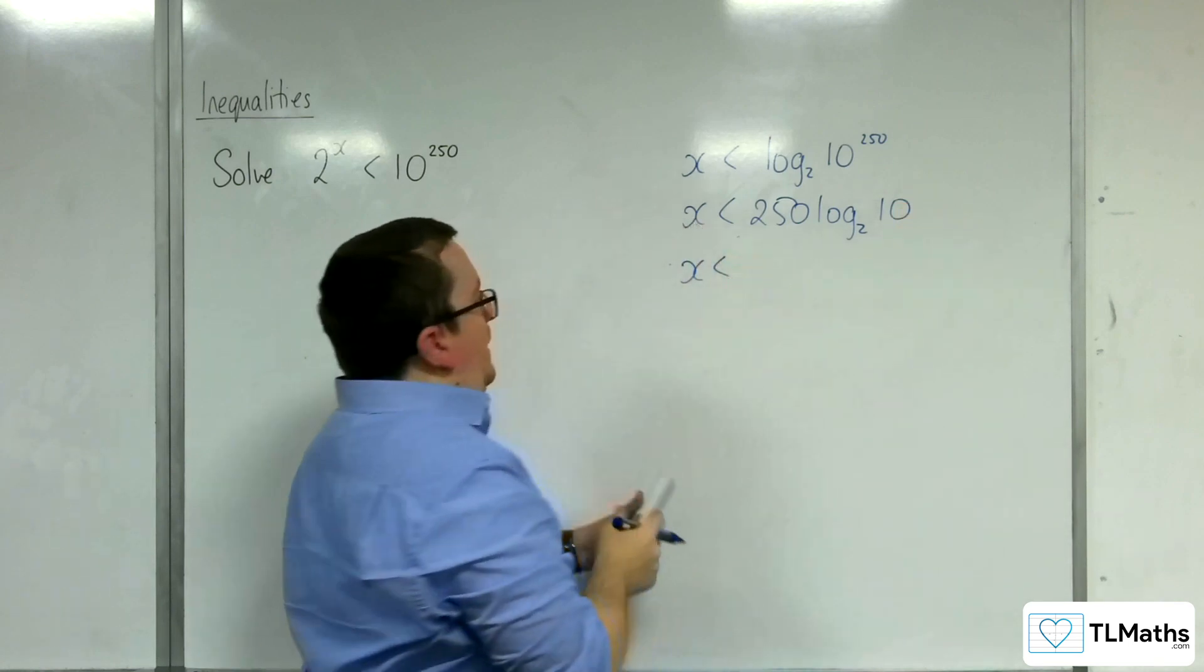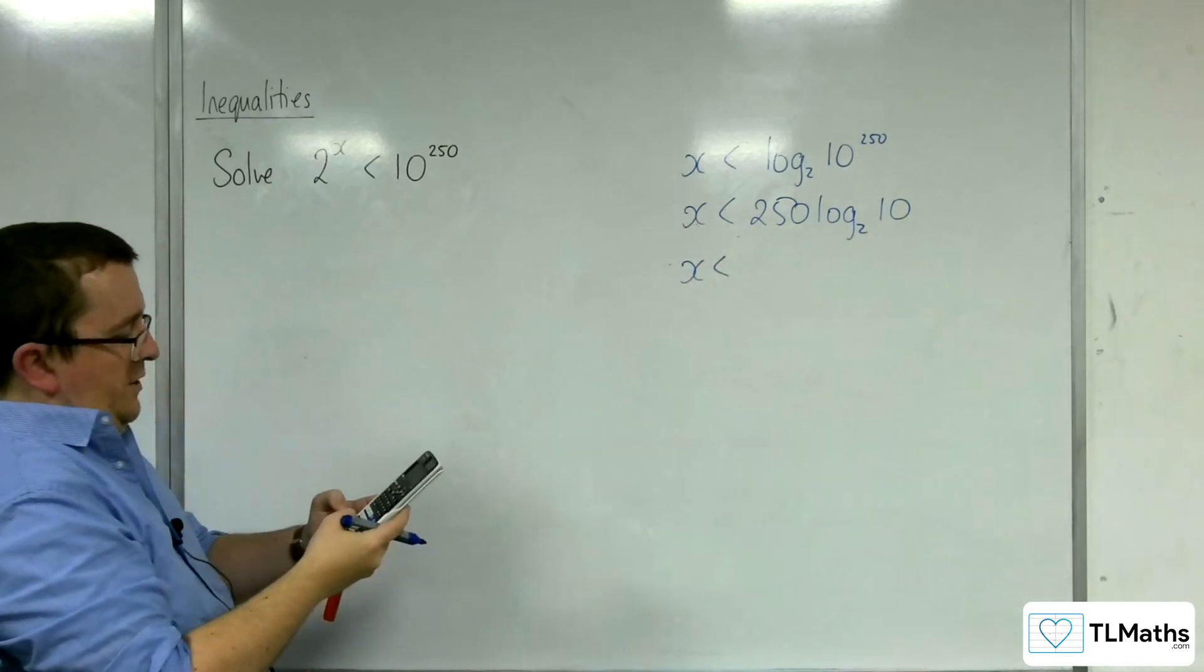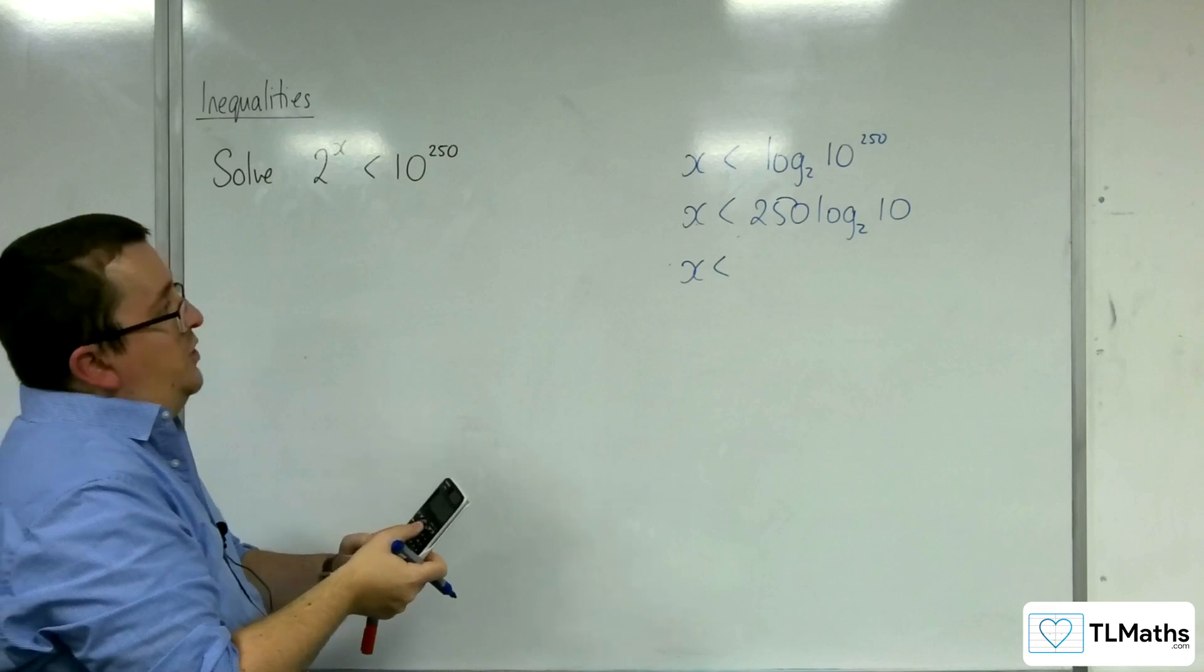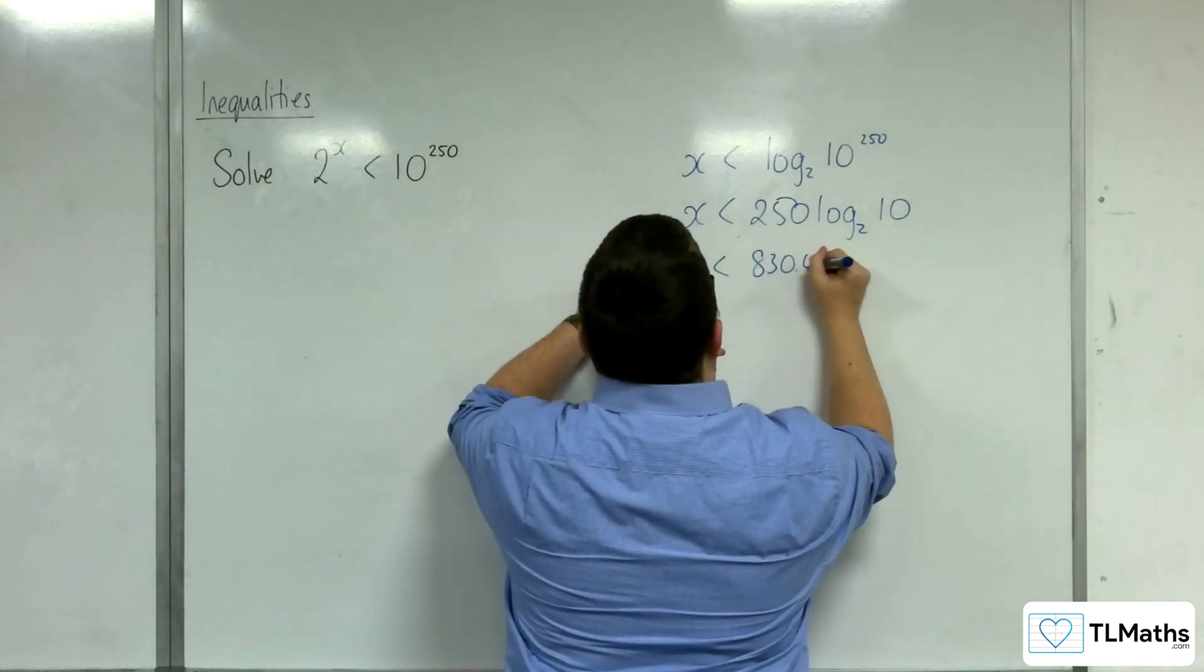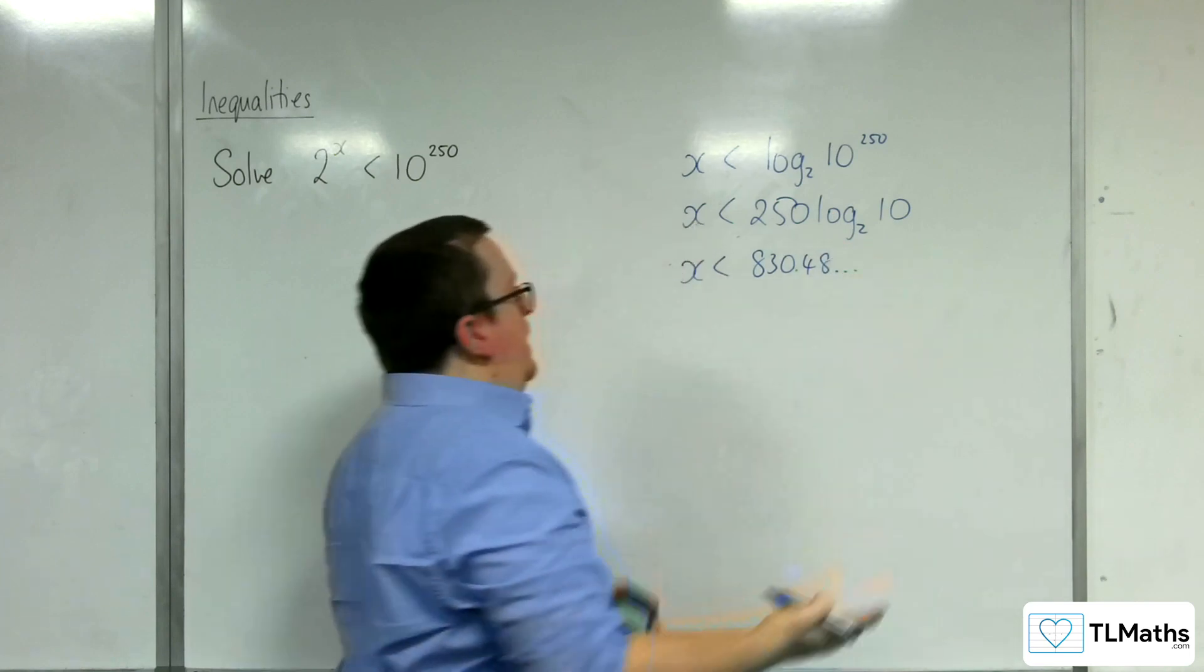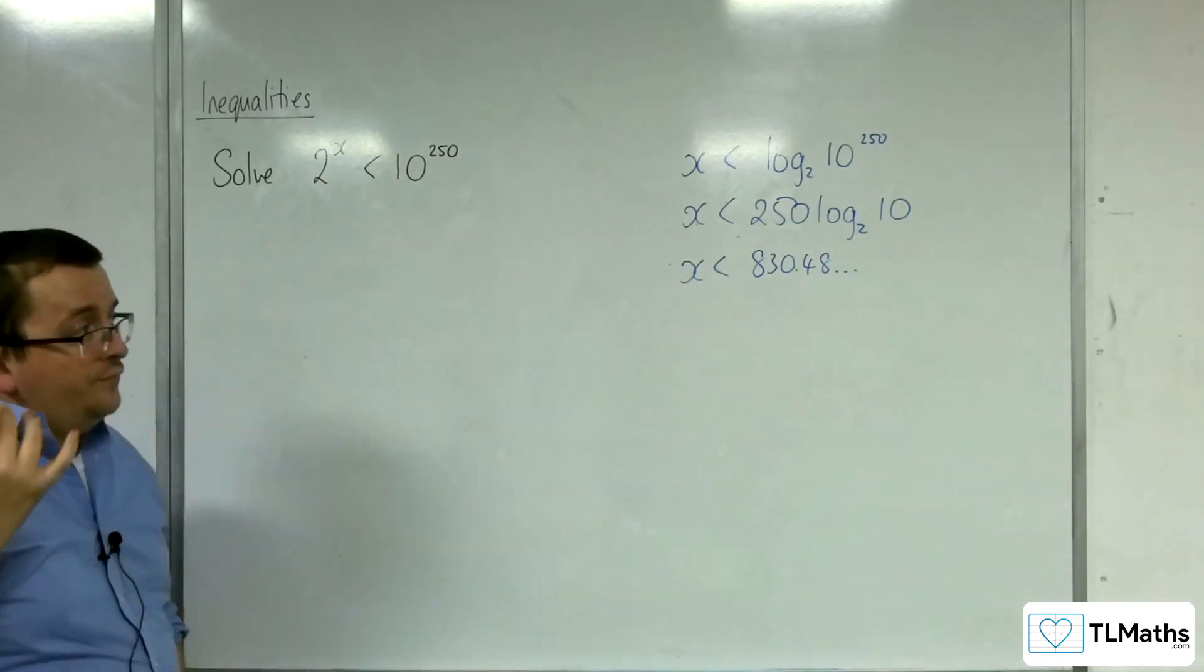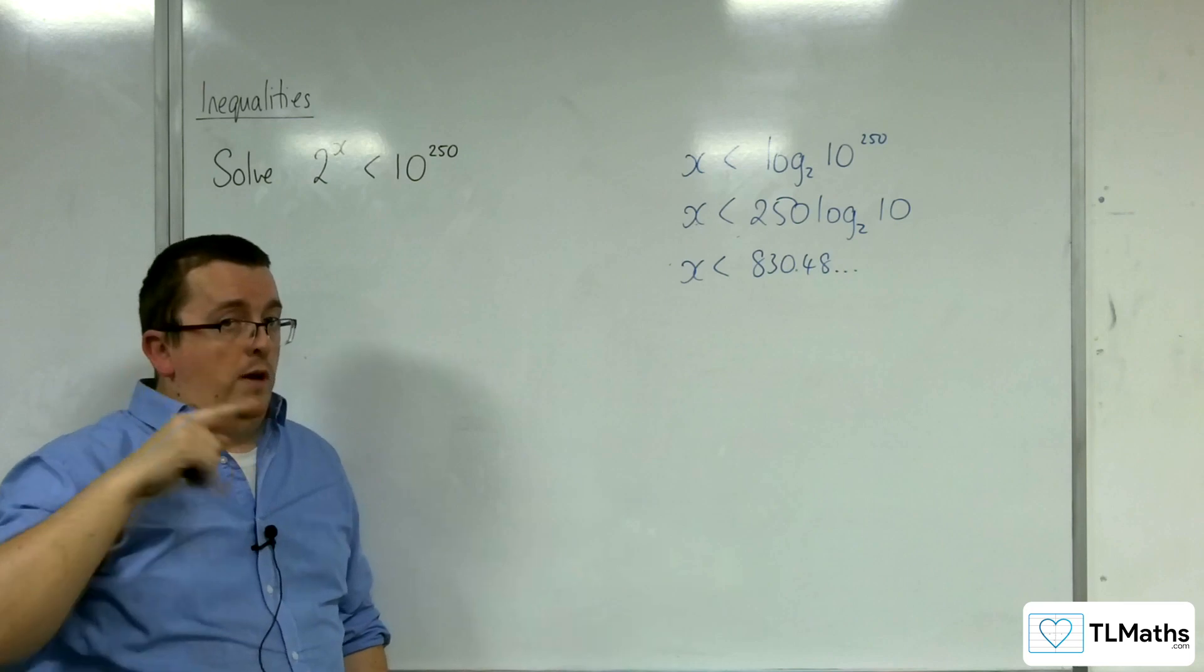And so x must be less than, well, let's write 250 times log base 2 of 10 is 830.48, etc. Okay, now, in this case, this one does work, right?